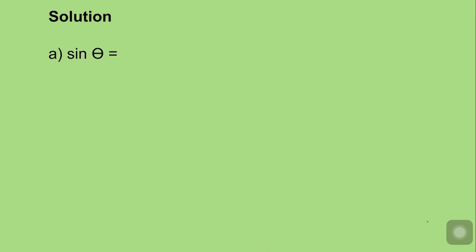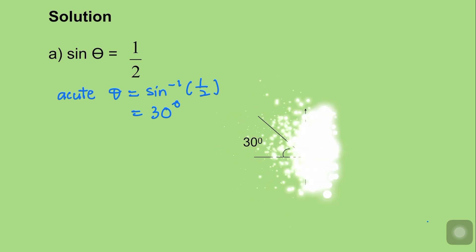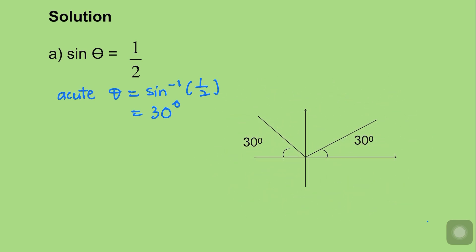Solution A: sin θ = 1/2. Normally we have to find the acute angle first. The acute angle is sin⁻¹(1/2) = 30°. We observe that sine is positive in the first and also in the second quadrant. So sin θ = 1/2 is situated in the first and second quadrant, and the solution is θ = 30°.